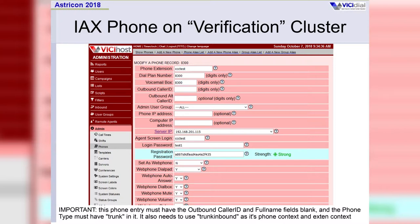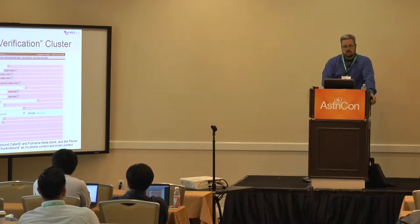This is the phone you need to set up. The dial plan number 8300 in VICIdial by default just hangs up immediately, which is why we use it for these, because we're not planning on actual phone calls coming in without any extension set to them. Set it up as a normal phone account — you want to use a strong registration password. The phone entry must have the outbound caller ID and the full name field set to blank. That is very important because if these are set to something, they'll override every phone call's caller ID information, and you want to make sure that information is preserved for the transfer calls.